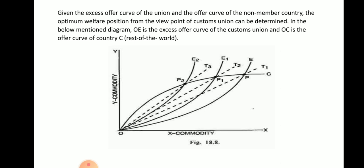Given the excess offer curve of the union and the offer curve of non-member country C, the optimum welfare position from the viewpoint of the customs union can be determined. In the diagram, OE is the excess offer curve of the customs union and OC is the offer curve of country C, that is, the rest of the world.